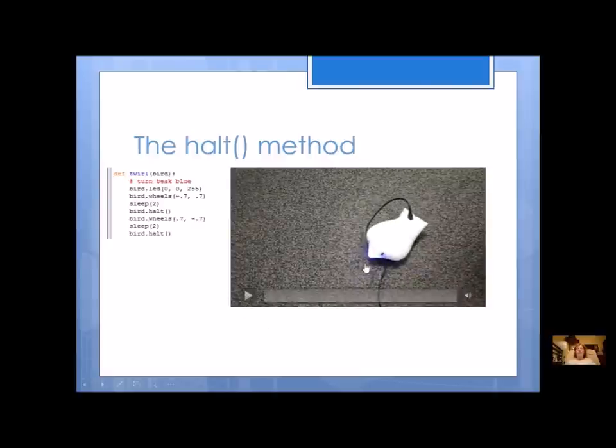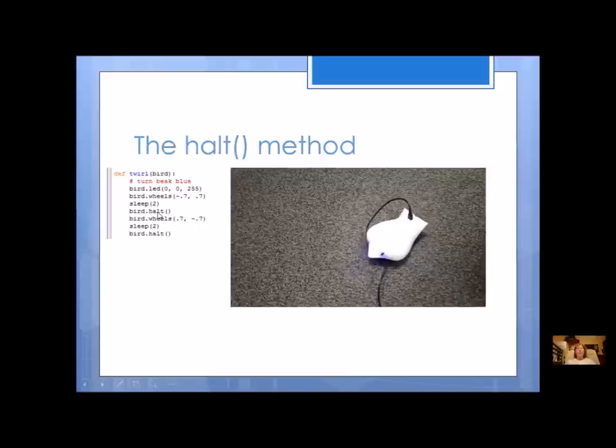Now could you tell when it twirled the first time that the beak was blue, and then after the HALT it twirled again but the beak had no color? Because the HALT stopped everything. I started the wheels again but I didn't start the beak again.